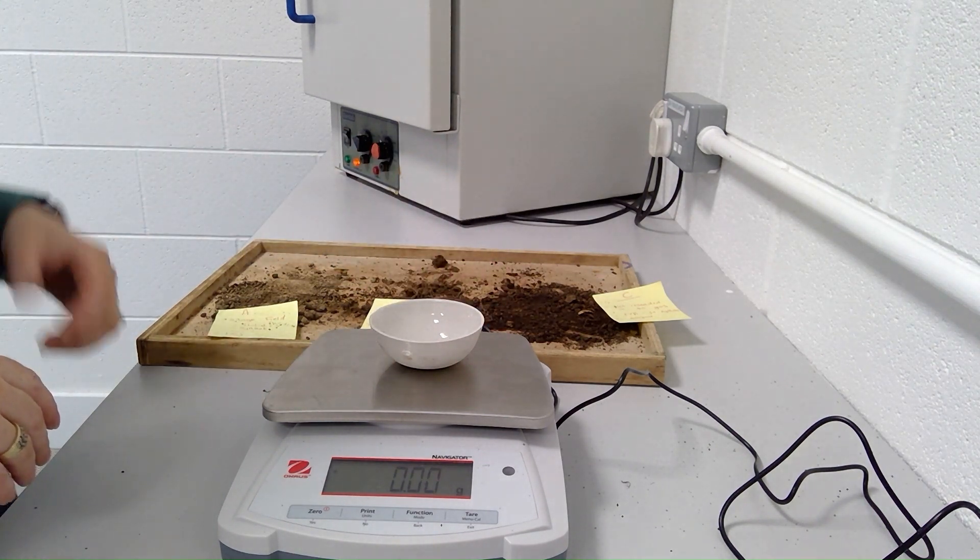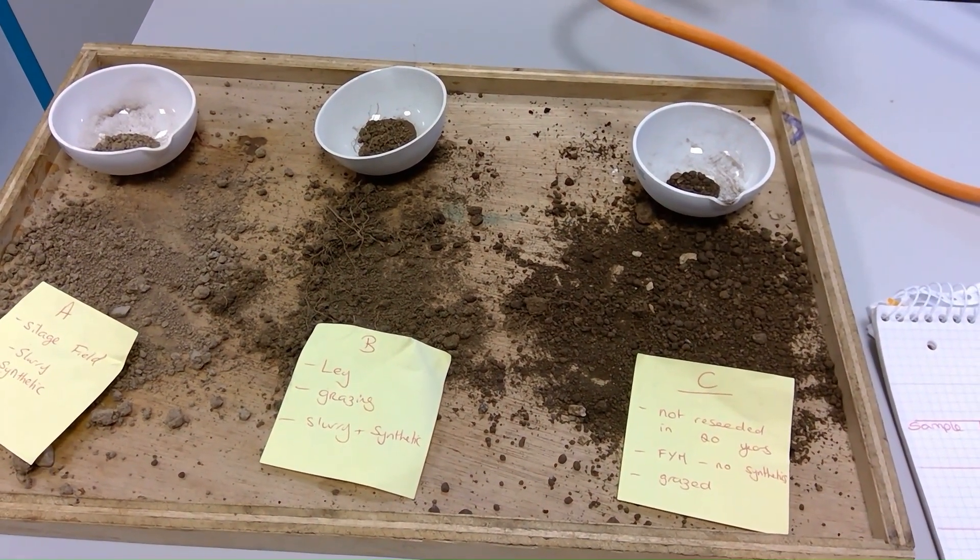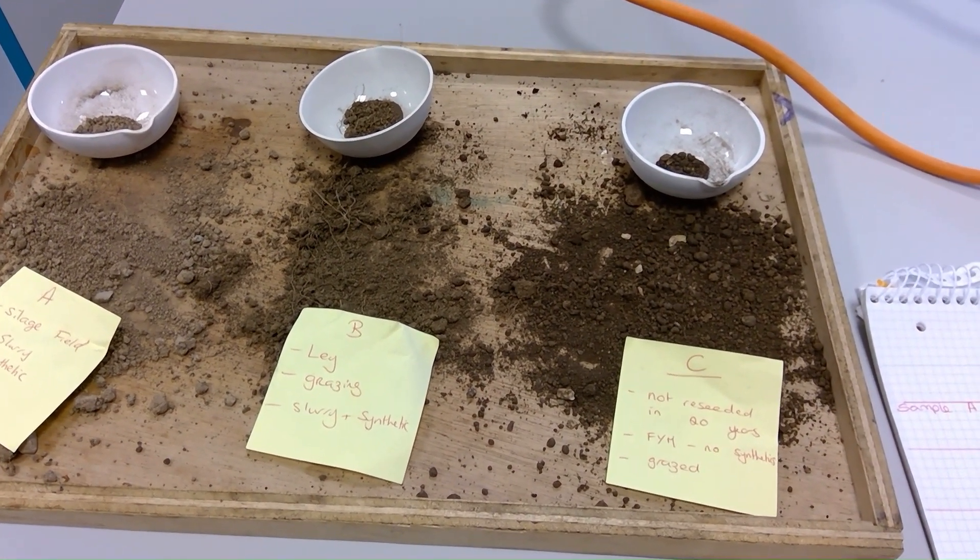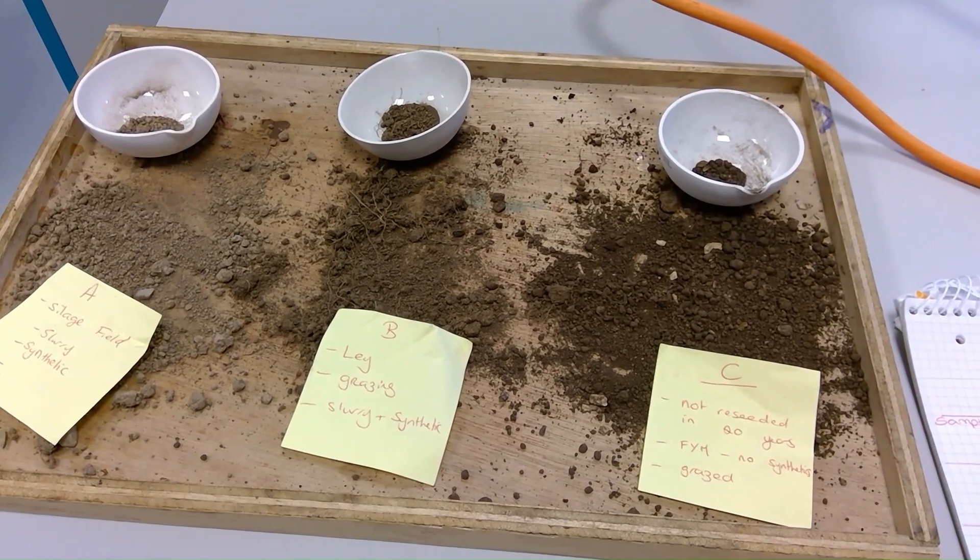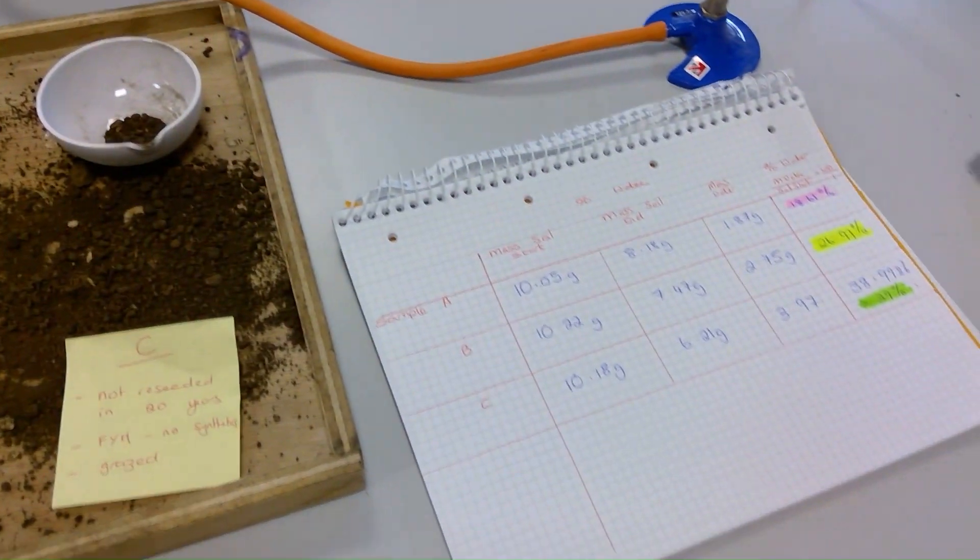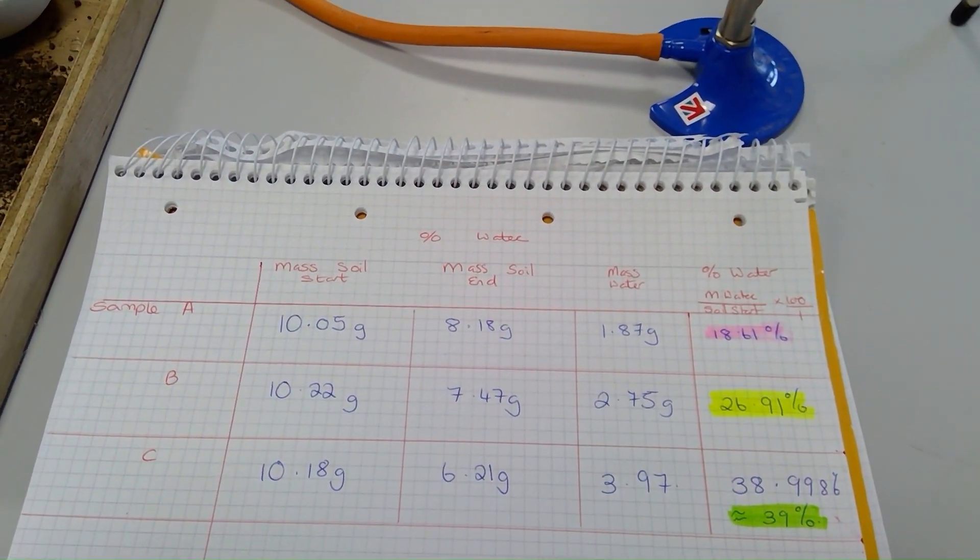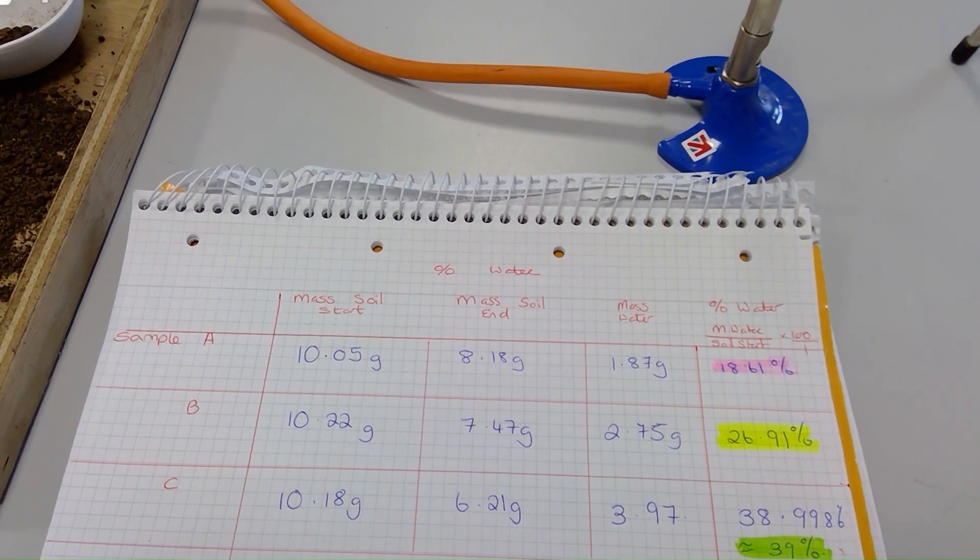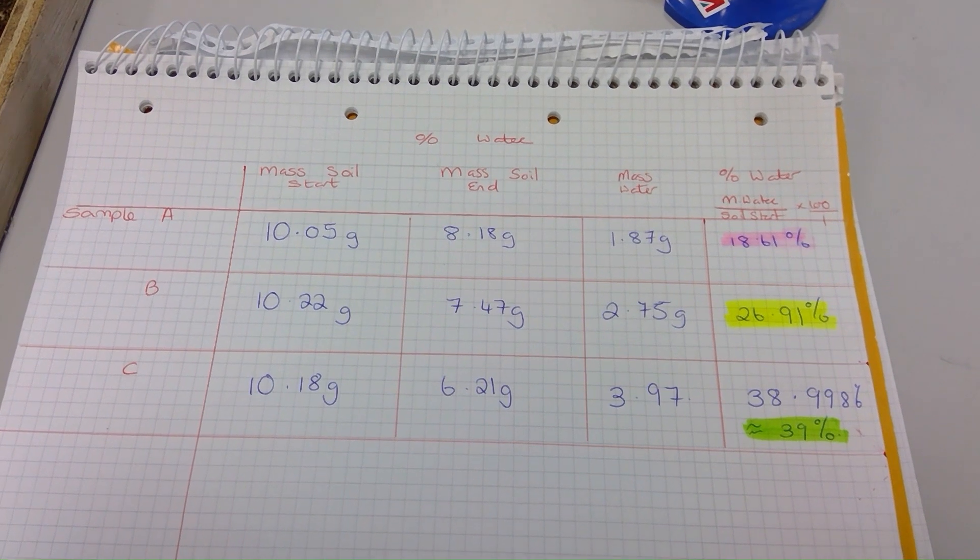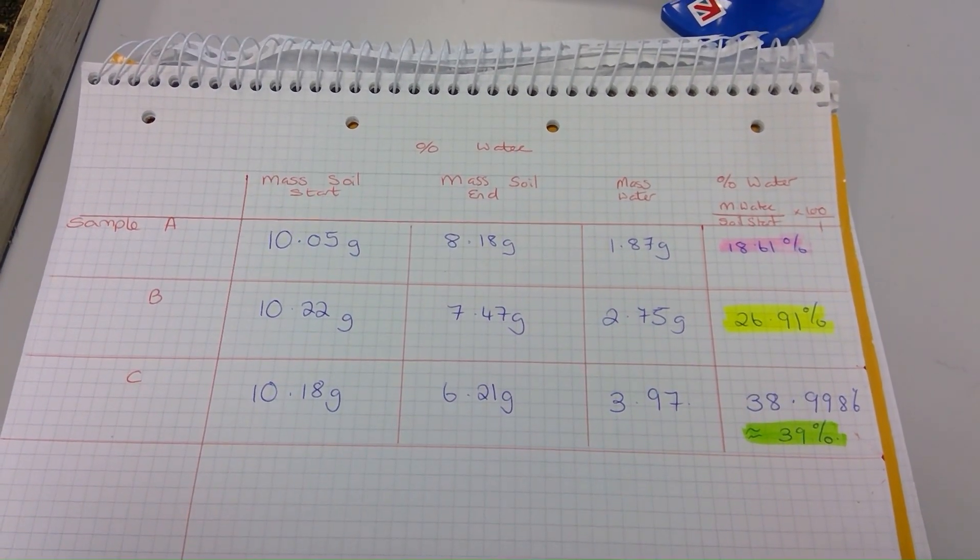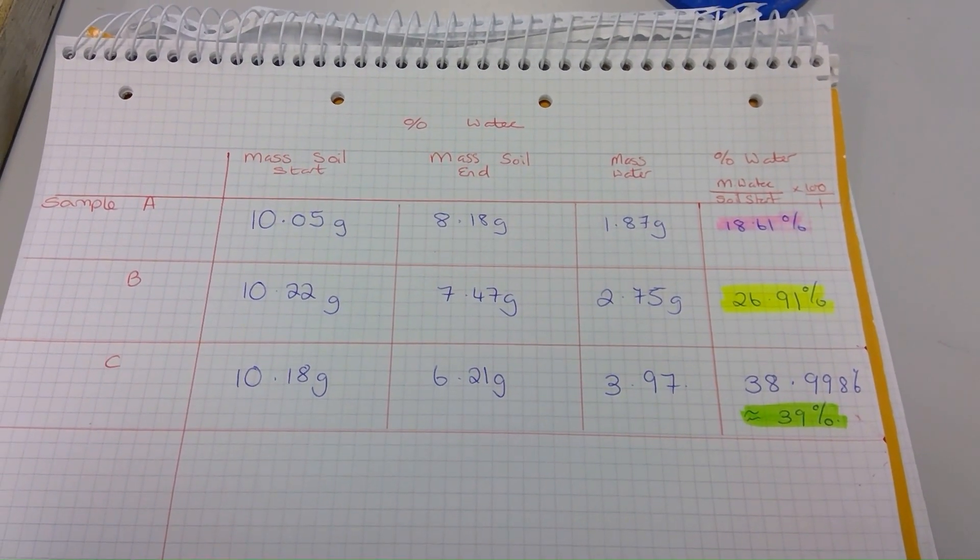I have removed these soil samples from the oven when their mass remains constant. It's interesting to note that these soil samples were sitting out on the bench for about two days before I put them in the oven. But if we have a look at the results, we can see that sample A, which was a silage field with synthetics and slurry, has a percentage water content of 18.61%. B, which was grazing, slurry, and synthetics, had a water retention of 26.91%.